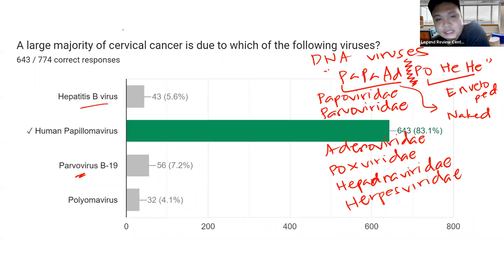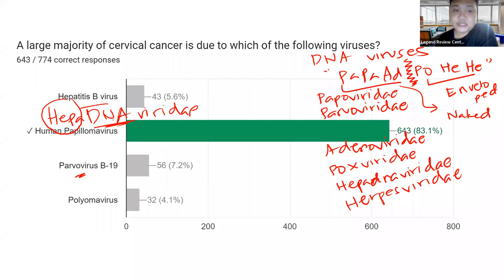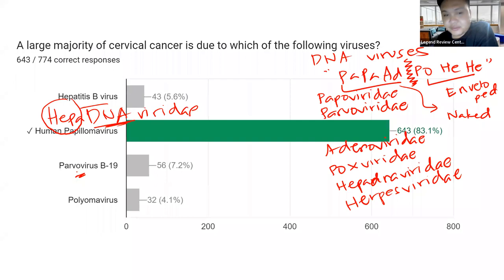Can you identify the family of hepatitis B virus? It belongs to Hepadna viridae — HEPA DNA — which is why hepatitis B is the only DNA virus among the hepatitis viruses; all others are RNA viruses. Human papillomavirus belongs to your Papova viridae. Parvo virus belongs to Parvo viridae. Polyoma virus also belongs to Papova viridae.